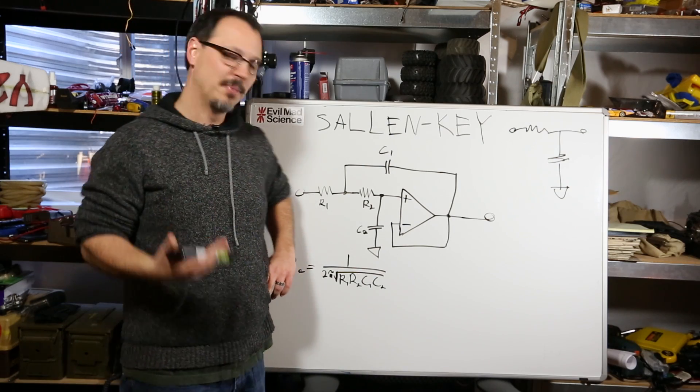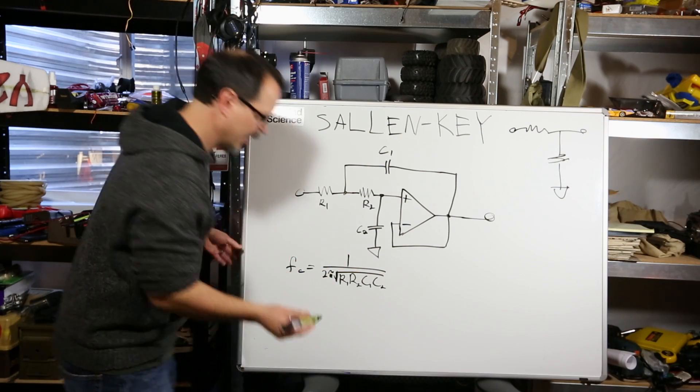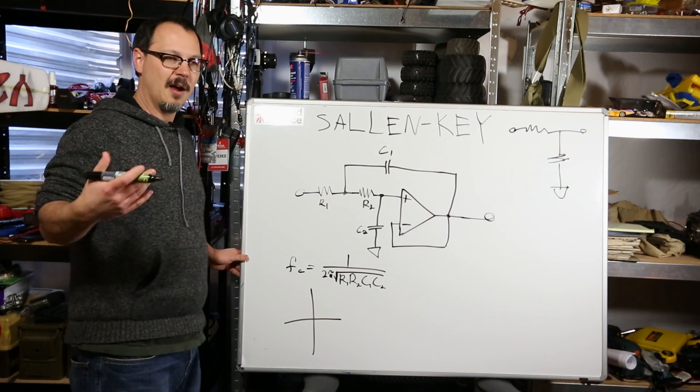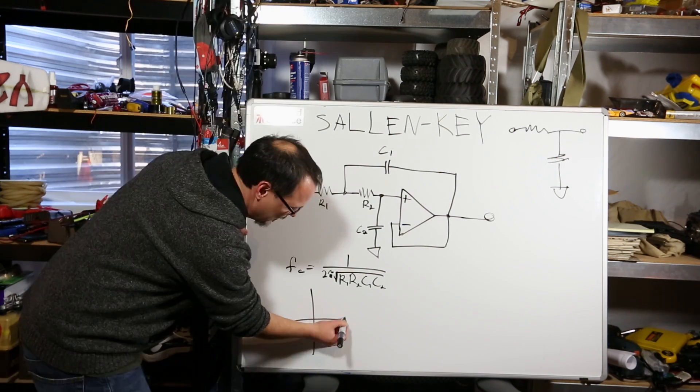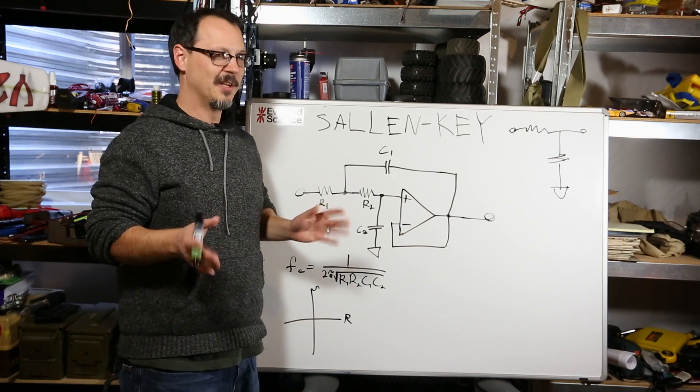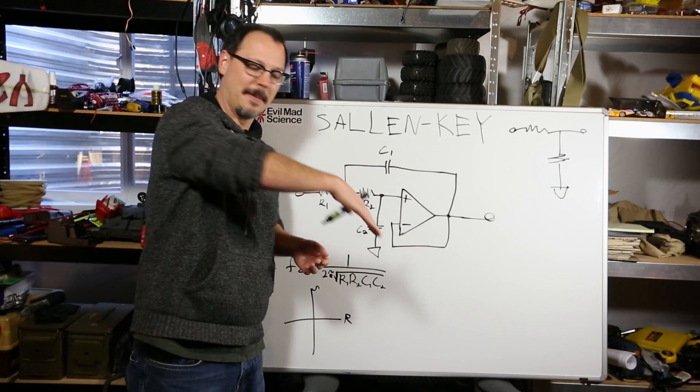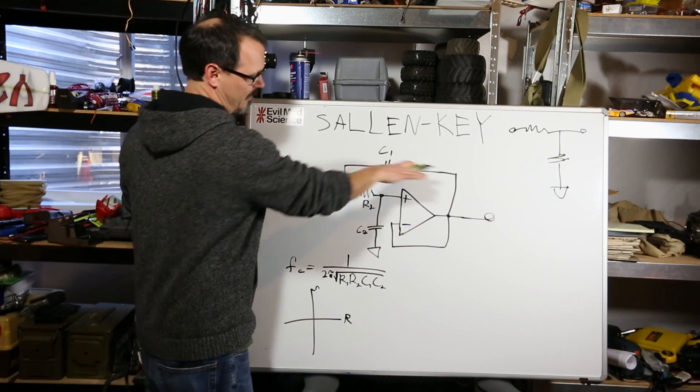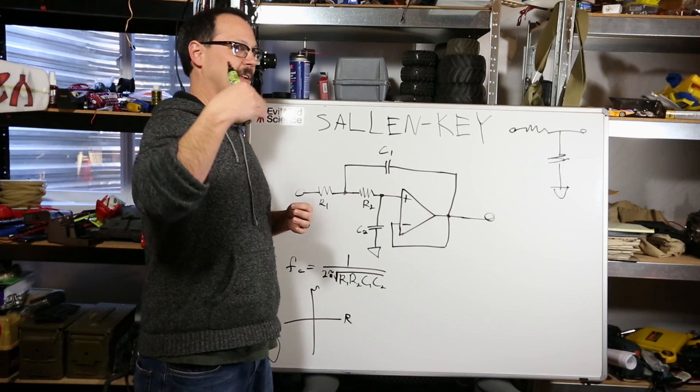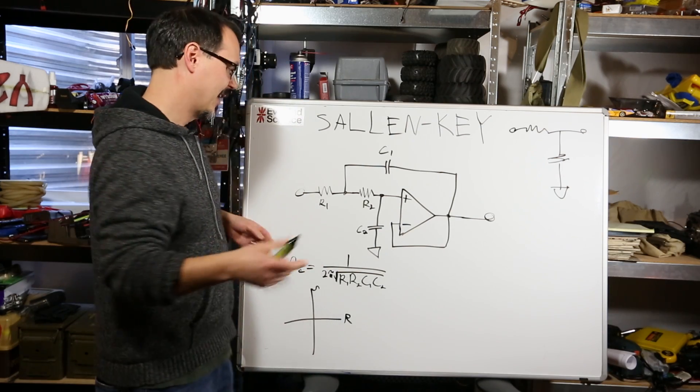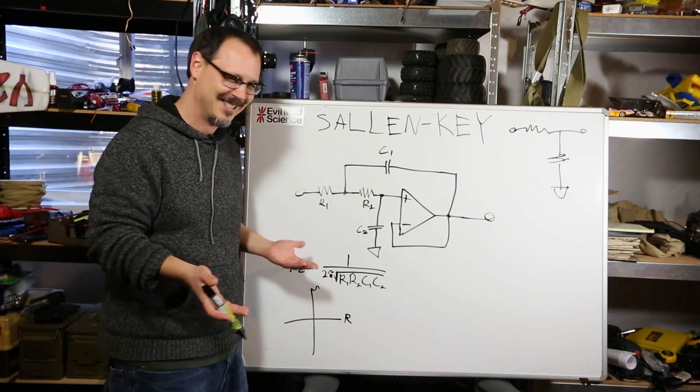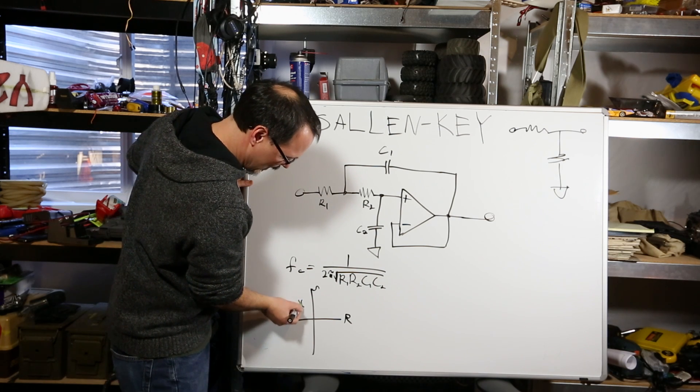You have something called a pole zero plot. And it is a four-quadrant plot in the S-domain, Laplace. This is the real axis, and this is like the S-axis, or the imaginary axis. It's not really imaginary. Boy, you see this just go downhill. We're dying. The transfer function of this is represented by a polynomial equation in the S-domain, and the roots of that polynomial equation are poles and zeros that end up on this plot.